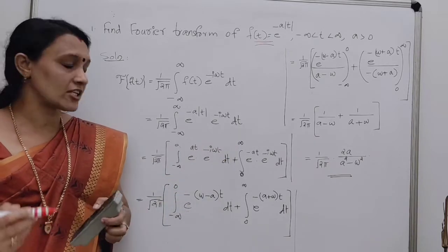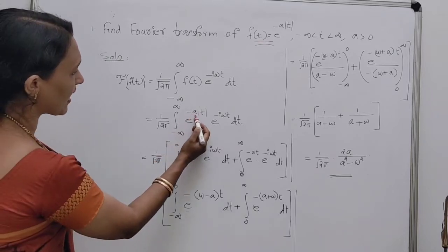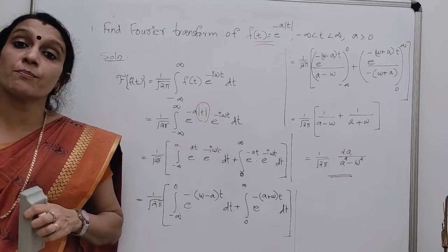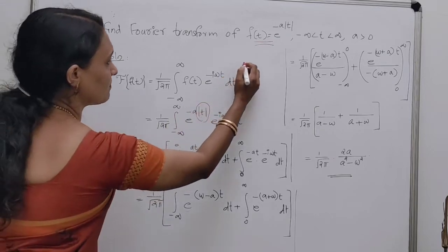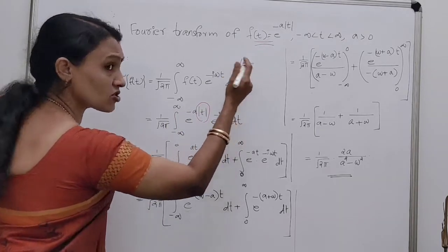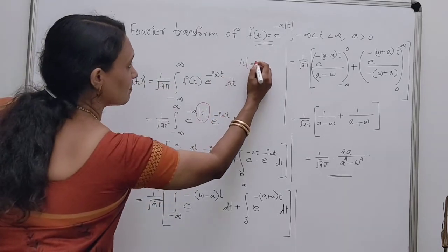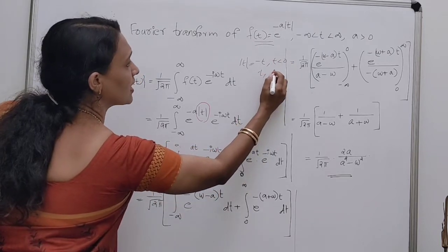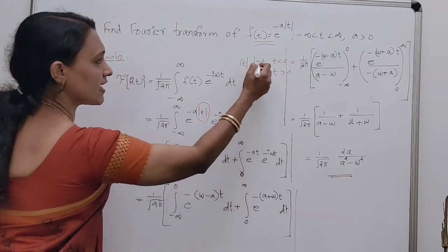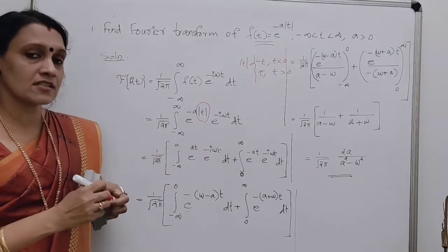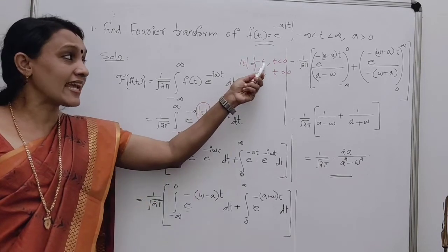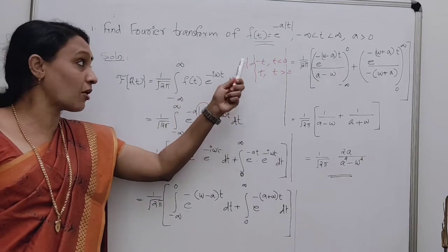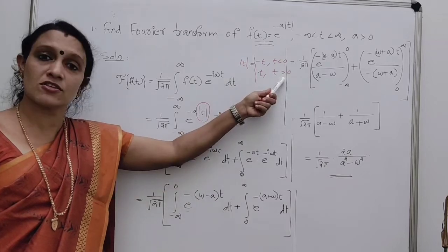The modulus function |t| takes two different values: it is minus t for t less than 0, and t for t greater than or equal to 0. So we use these two cases to handle the integral.